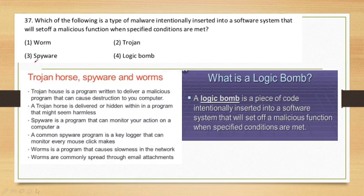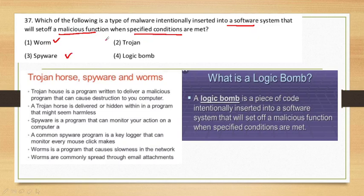Question number 37: Which of the following is a type of malware intentionally inserted into a software system that will set off a malicious function when specified conditions are met? The options are: worm, spyware, Trojan, and logic bomb. Let's discuss them first.